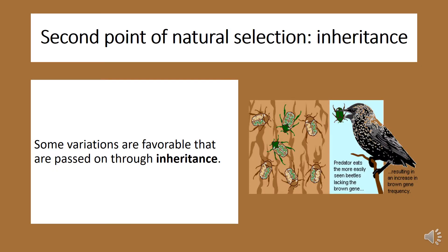Some variations are favorable and are passed on through inheritance, which is the second point of natural selection. This can be seen in an illustration: green beetles are easily spotted by birds, which eat them, so the population of green beetles declines. Brown beetles increase in population because their color keeps them camouflaged on tree bark.